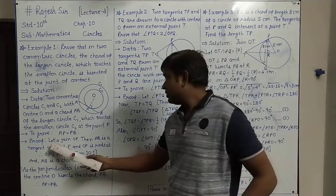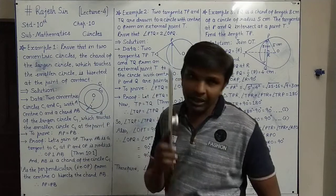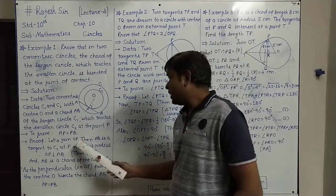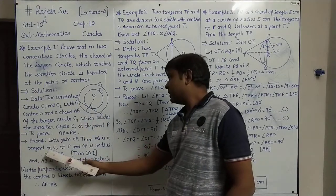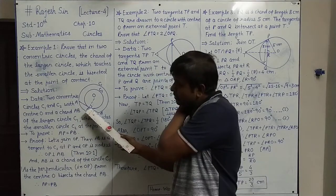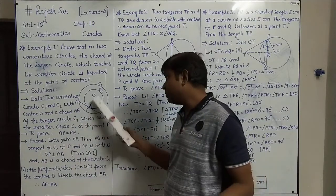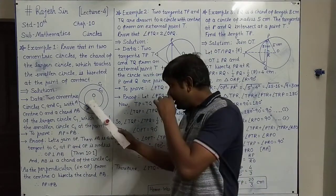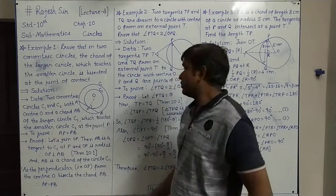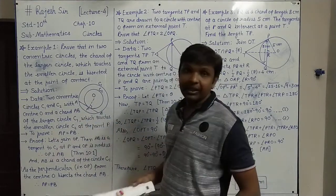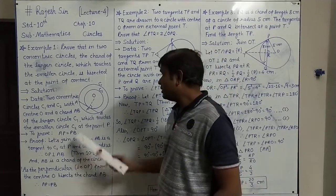The proof: first, let's join OP. AB is the line intersecting circle C2 at only one point, so AB is tangent to the smaller circle C2 at point P. OP is the radius, AB is the tangent, and by the theorem, the radius is perpendicular to the tangent. So OP is perpendicular to AB.